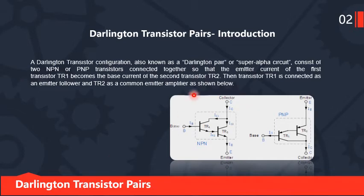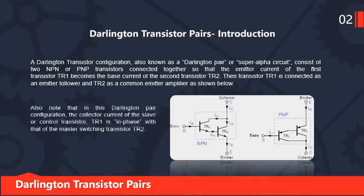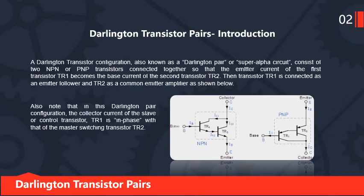This arrangement is called a Darlington transistor pair and it is called a super alpha circuit. Also note that in this Darlington pair configuration, the collector current of the control transistor TR1 is in phase with that of the master switching transistor TR2.